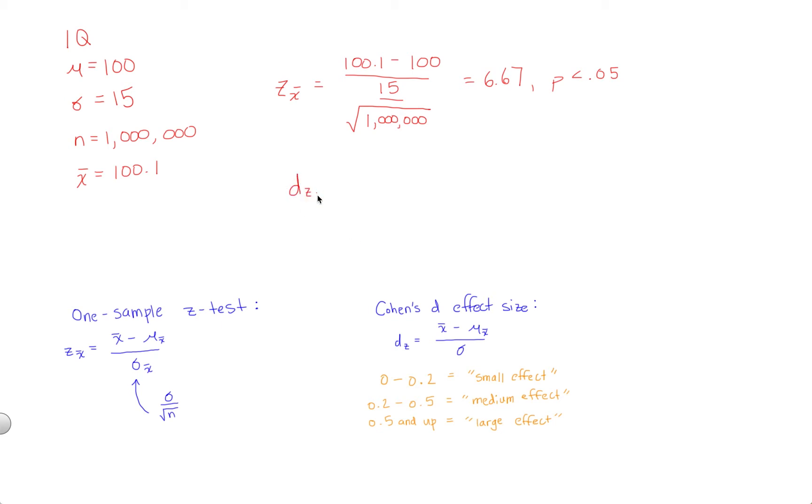Let's go ahead and plug this in. D sub Z, Cohen's D for the Z test, equals, we have our same numerator, X bar minus mu, 100.1 minus 100, divided by, notice, this is now just standard deviation, not standard error. Sample size does not factor into the equation for the effect size.